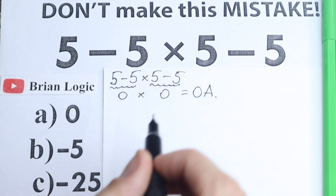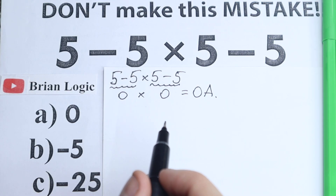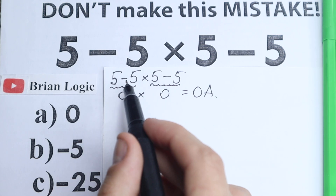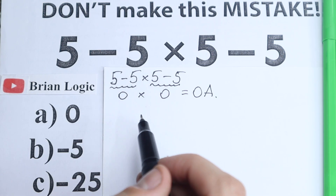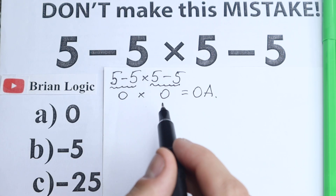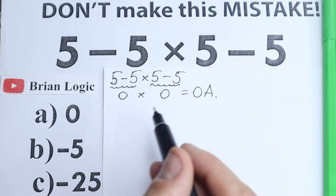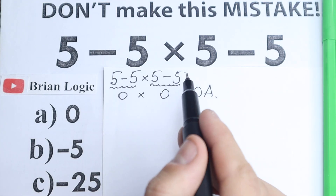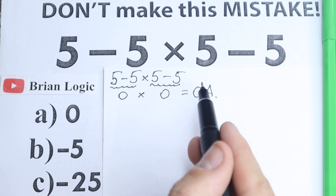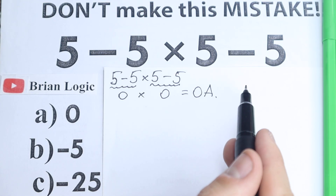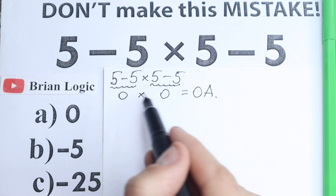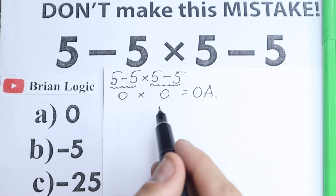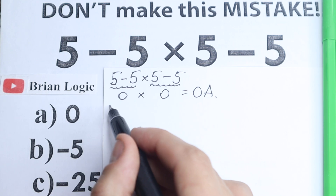Most people solve it like that, but this is absolutely the wrong solution, because we cannot jump from left to right. We need to know about order of operations — in math we cannot solve a question chaotically or skip steps. We need to know what is the first step, what is the second, and what is the third, because the order we select is going to create a different answer.